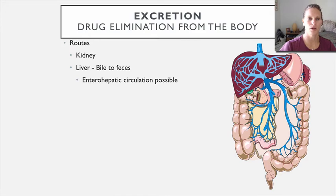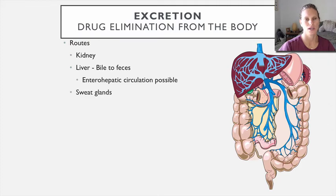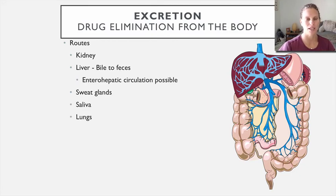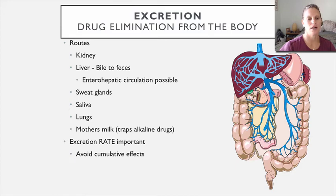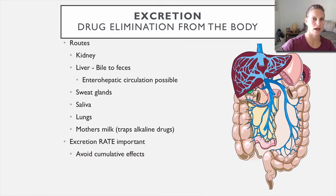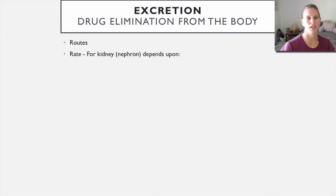The kidney is the major site of excretion, but the liver also excretes toxic substances into the feces, with the potential for recirculation. Drugs can also be excreted through sweat glands, saliva, the lungs, and breast milk — which can trap alkaline drugs. Excretion rate is important: when administering drugs chronically, we need to ensure they can be excreted to prevent drug concentration from escalating to a toxic level.